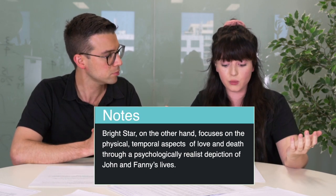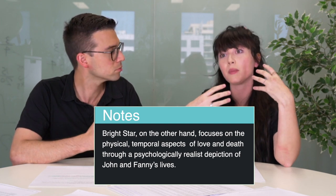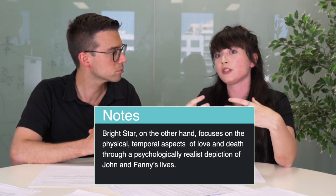Now we jump into Bright Star. In Bright Star, on the other hand, we have a focus on the physical and temporal aspects of love and death. Campion, the director, uses a more psychological, realist approach to explore those ideas. It's important to note it's not that Keats entirely avoids the physical — 'unravished bride' is one example — but we certainly see it more strongly expressed in Bright Star. Both texts share underlying similarities but come to different conclusions on those ideas.